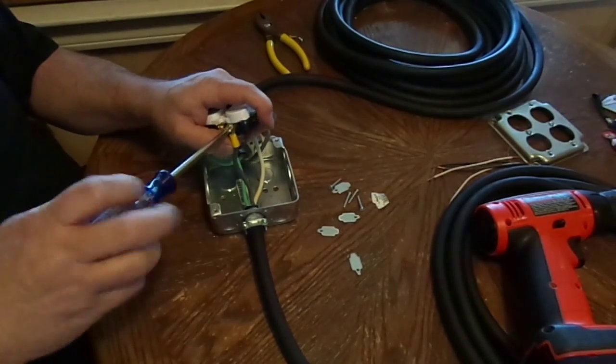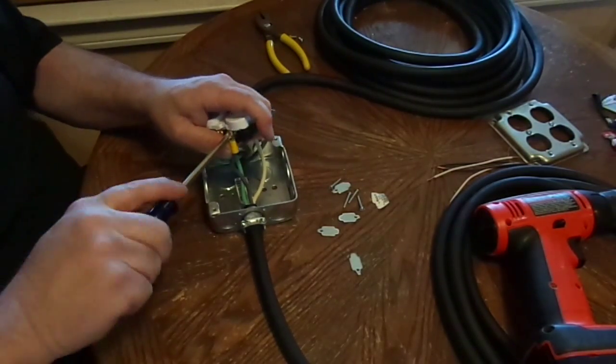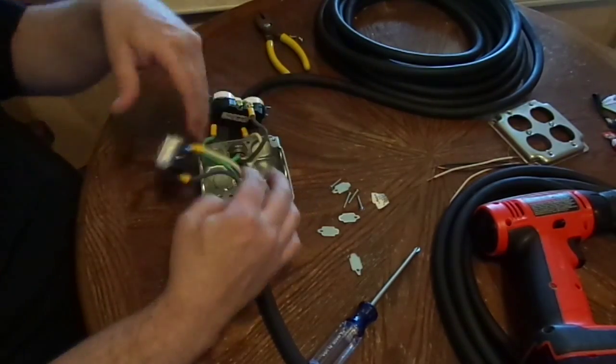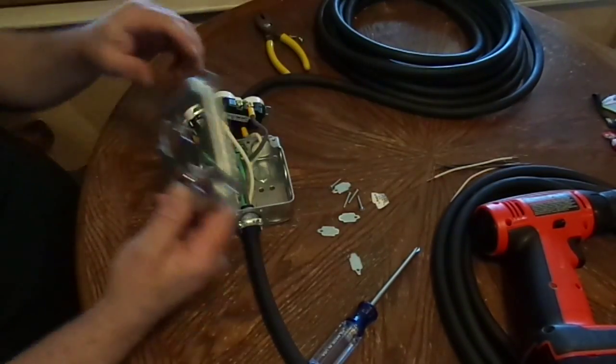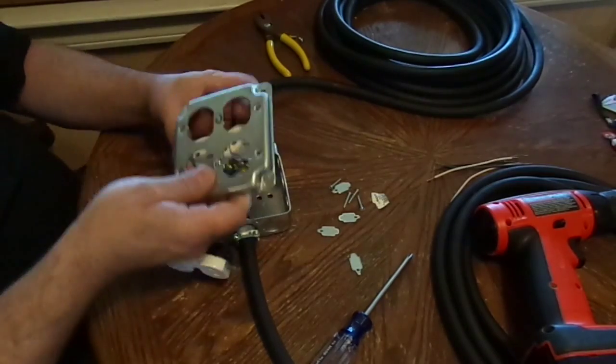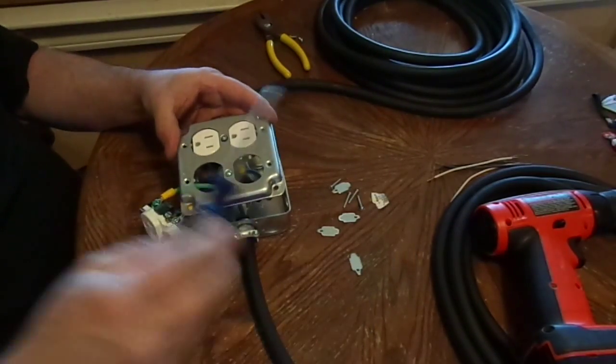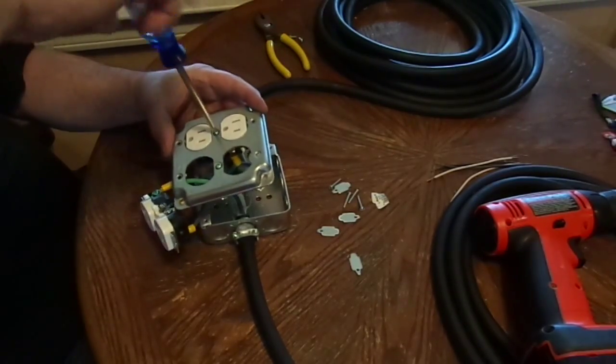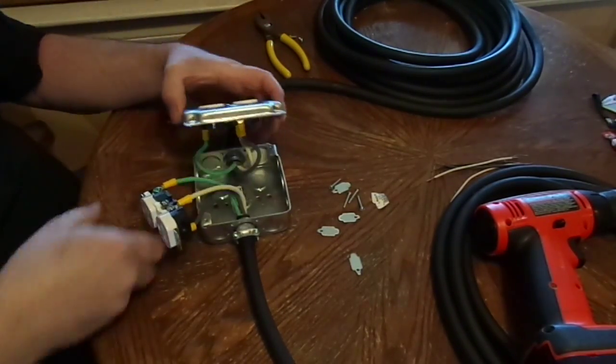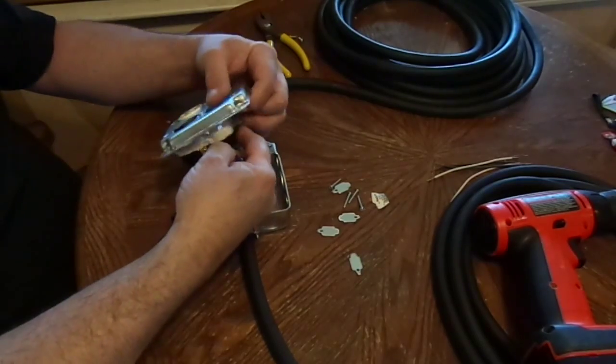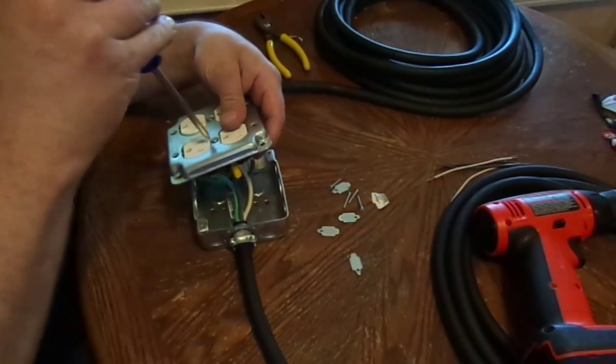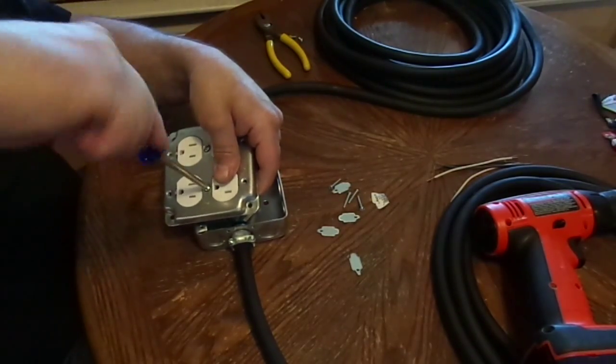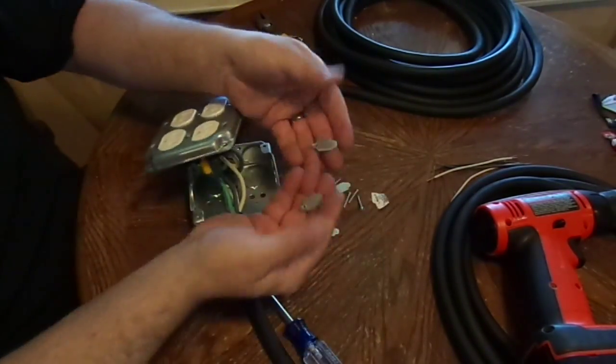So now we have these on here good and tight. Strain relief in case this ever pulls out. This is not going to come off of here. Okay, so now we'll take the cover. If your cover doesn't have these other screws, the center ones will hold it just fine.